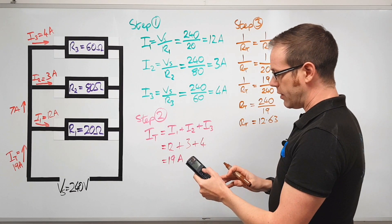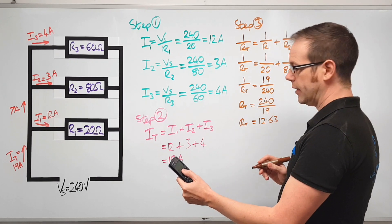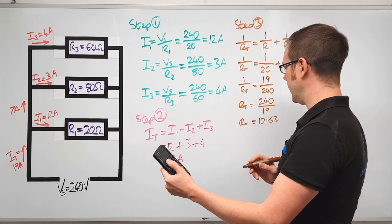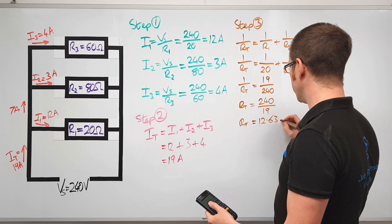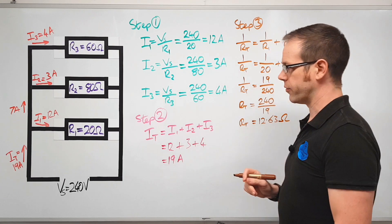However what we've done is we've rounded this off to two decimal places which should be accurate enough for what we're doing here. 12.63, the number after it is a one so that three remains the same. So there we go, the total resistance is 12.63 ohms, which is a really nice and neat answer that we've got there.